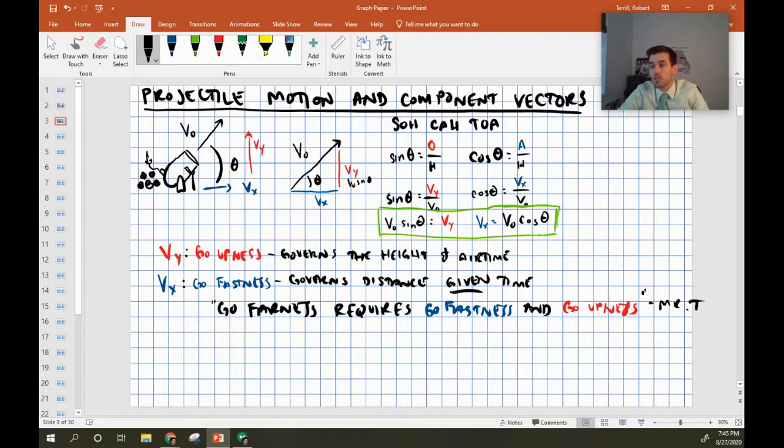So this leads to a unifying phrase, which is go farness. Go farness requires go fastness and go upness, and that's from a real physics teacher. If you have both and you have a combination of both, you can go very far. But if you only have one, like if I only have go upness, I'm going to go straight up in the air and I'm going to come straight down and I'm not going to move over even a little bit. If I have lots of go fastness...